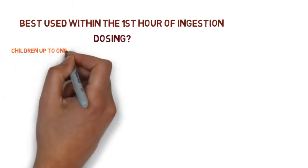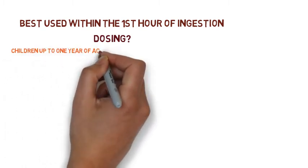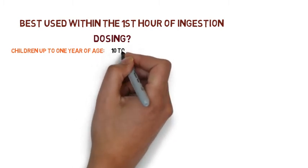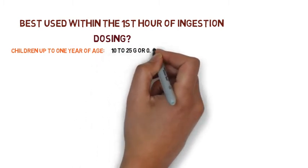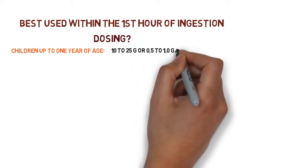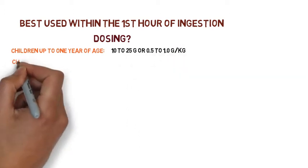Children up to one year of age: we use a dose of 10 to 25 grams, or according to weight, 0.5 to 1 gram per kg.